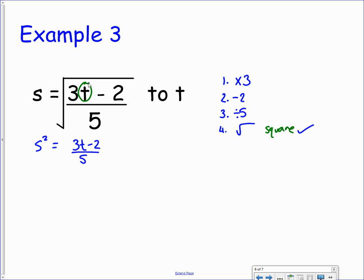Now we want to undo the divide by 5. We can do that by times by 5. Again, to both sides of the equation. So that will leave us with 5s squared on the left-hand side and 3t minus 2 on the right.